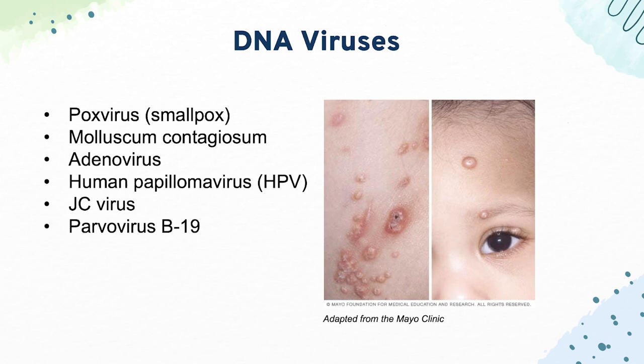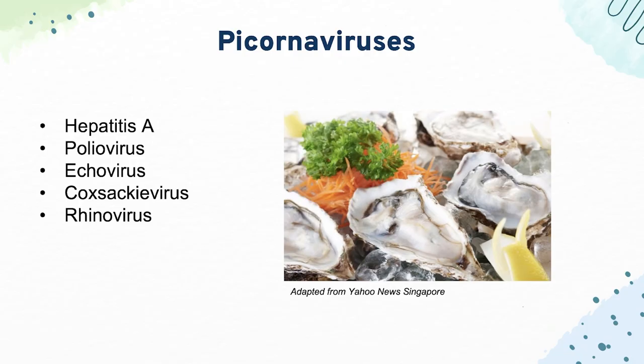Next, we have our RNA viruses. Starting off with hepatitis A — you get this from seafood and it causes an acute self-resolving disease in adults, though it's often asymptomatic in kids. Next, we have poliovirus. Know how it presents and also the two vaccines: the Sabin vaccine, which is live attenuated, and the Salk vaccine, which is killed.